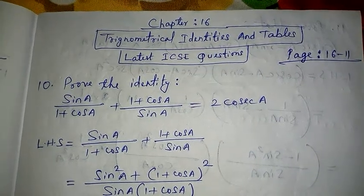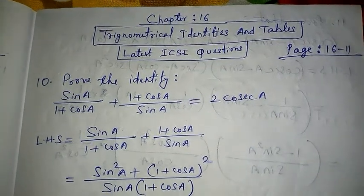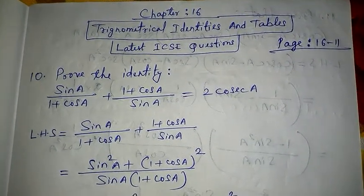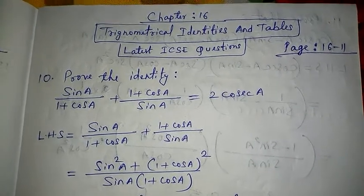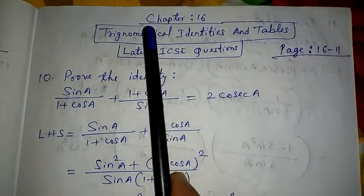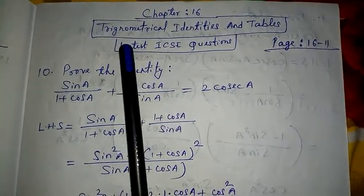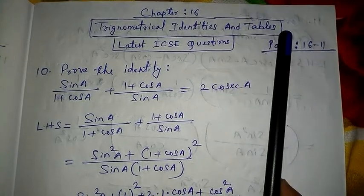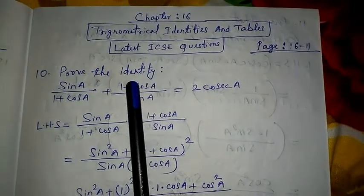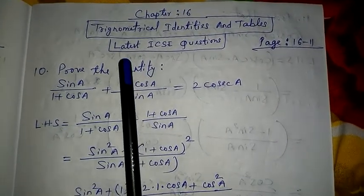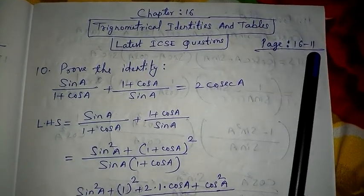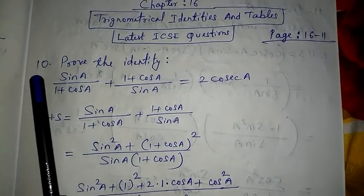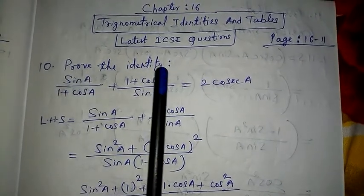Class 10 children, today we will learn some more very important questions and some technical questions of Chapter 16, Trigonometrical Identities and Tables. I have taken some questions from the latest ICC questions, that is page number 16, question number 10 — prove the identity.